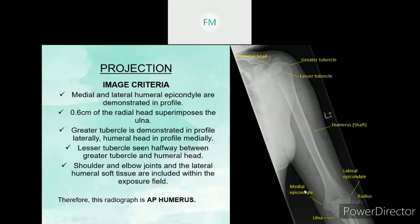Second, 0.6 of radial head superimposed with the ulna. Third, at the superior part, we have to see the greater tuberosity is demonstrated in profile laterally. And the lesser tuberosity is seen halfway between the greater tuberosity and humeral head. Last, the shoulder and elbow joint and the lateral humerus soft tissue are included within the exposure field. Therefore, this radiograph is AP humerus.